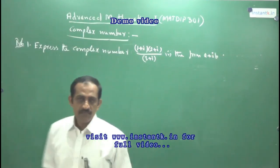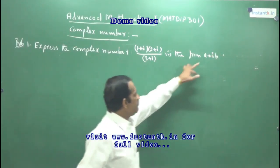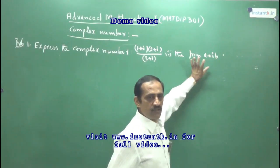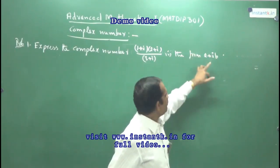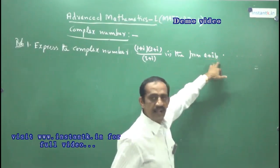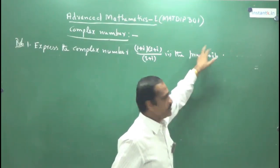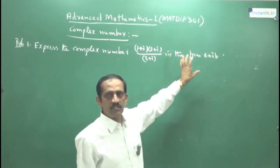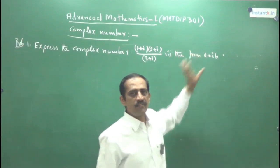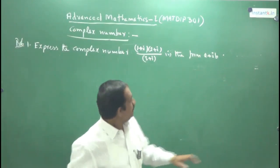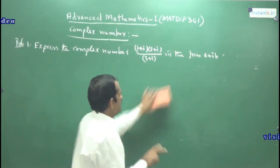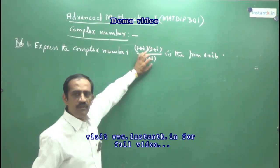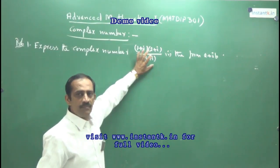Sometimes instead of writing the form x plus iy, they may give you a plus ib. This form of a complex number is called the standard form. When a problem of this type is given, you have to avoid the complex number in the denominator — the denominator must be a purely real number. For that, take the conjugate of the denominator and multiply numerator and denominator by it.